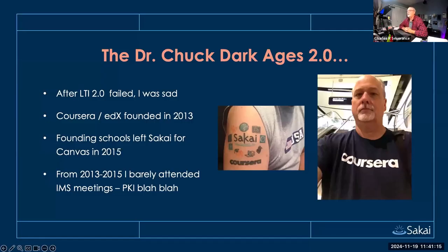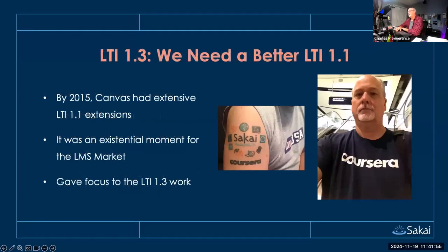I got distracted by Coursera and edX, which were founded in 2013. In 2015, the founding schools left Sakai for Canvas. I was really distracted with IMS from 2013 to 2015 — they were just talking. Sometimes Google would have an idea, sometimes Microsoft, and they'd waste six months trying to make Google Classroom or Microsoft Teams implement LTI. I thought they were playing political games, not building standards. By 2015, Canvas had really bought in and doubled down on LTI 1.1 with tremendous extensions. Their LTI 1.1 plus about 50 extensions was like the best thing in the market.